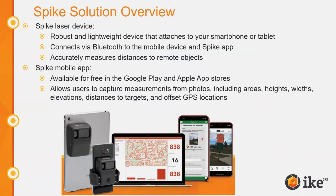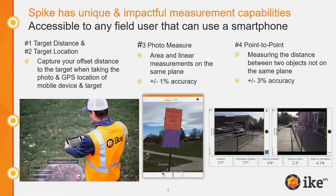Spike works with smartphones and tablets, connecting via Bluetooth to your mobile device. It also works with the Spike app, which is free to download. Once you have the app up and running, you can take photos of objects, GPS locate them with distance offset, and measure within the photos. We've worked with many different applications, ranging from signage inventory to building materials to facilities management — because that need to measure and GPS locate objects simply and inexpensively is ubiquitous.